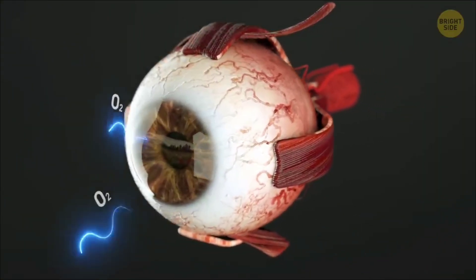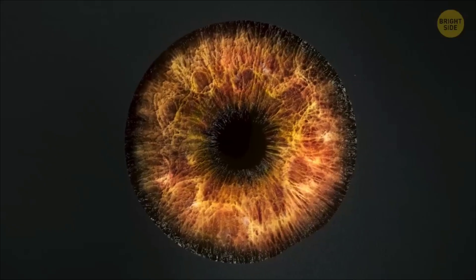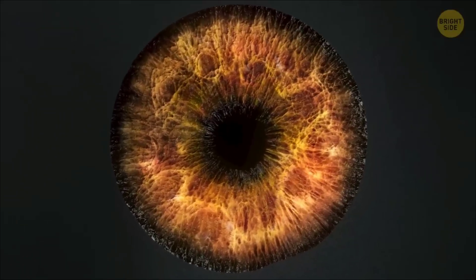I'll cover why astigmatism causes lights to be distorted like this, why this is worse at night, and how glasses and contacts for astigmatism address this. To understand astigmatism, first you need to understand how your eyes are supposed to work.